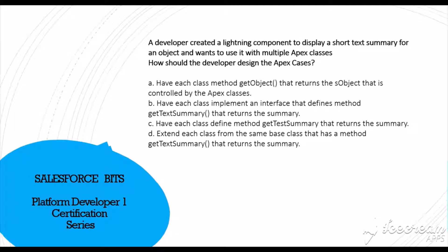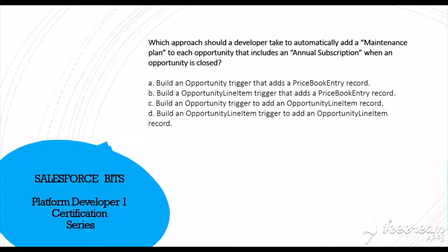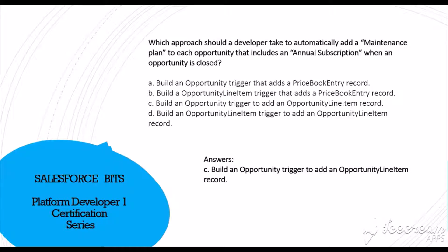A developer created a Lightning component to display a short text summary for an object and wants to use it with multiple Apex classes. The correct answer is A: have each class implement an interface that defines the method getSummary, which returns the summary. That way you can reference it from every class for an object. For automatically adding a maintenance plan to each opportunity that includes an annual subscription when closed, the correct answer is C: build an opportunity trigger to add an opportunity line item to the record that is getting closed.